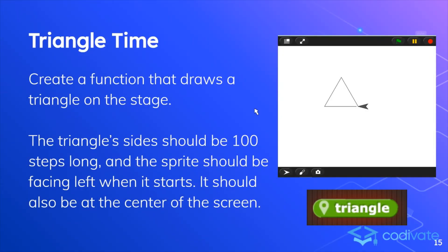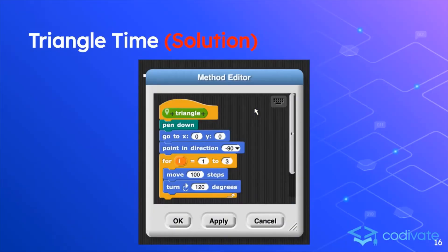Next exercise. Create a function that draws a triangle on the stage. The triangle sides should be 100 steps long, and the sprite should be facing left when it starts. It should also be at the center of the screen. This is the solution to the previous problem. There are no parameters in this case. So you set the pen down, you go to a certain x position, you point in a certain direction, and using a for loop from 1 to 3, you can move 100 steps, turn 120 degrees, and then keep on going. So this means it will move 100 steps and turn 3 times.